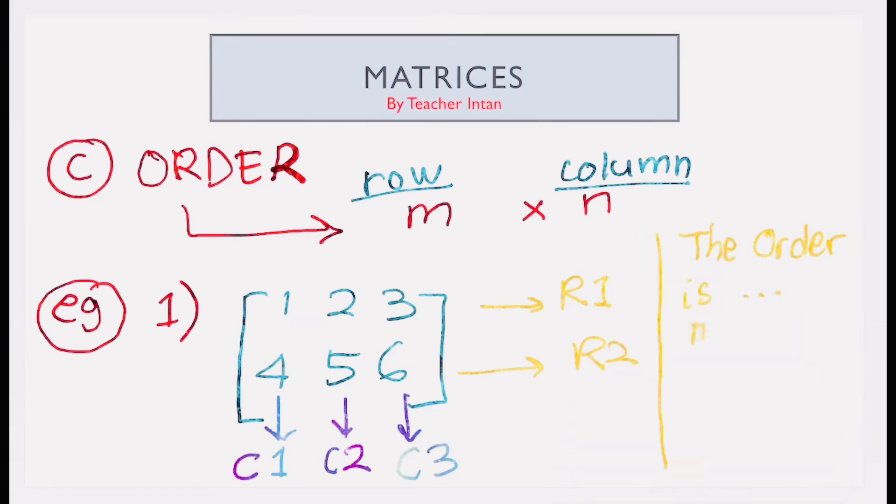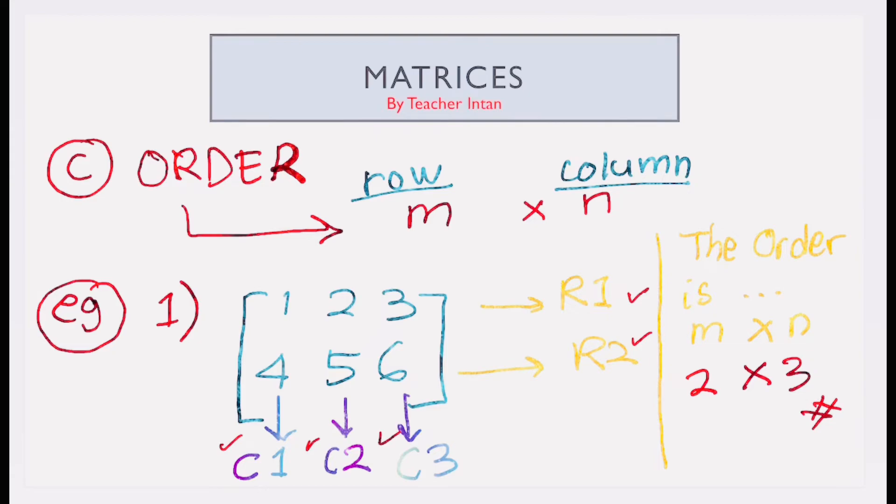Yes. So, the order for this matrix is 2 rows, 2 times 3 columns. 3. 2 times 3.